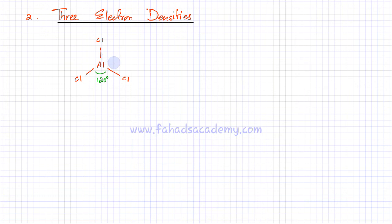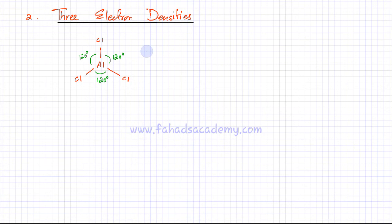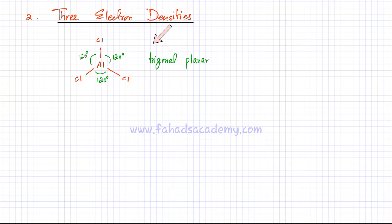The three bonds are going to be as far away from each other in three-dimensional space, so all angles would be 120 degrees. The shape of this molecule is called trigonal planar — it looks like a fan, but the technical name is trigonal planar, with angles of 120 degrees.